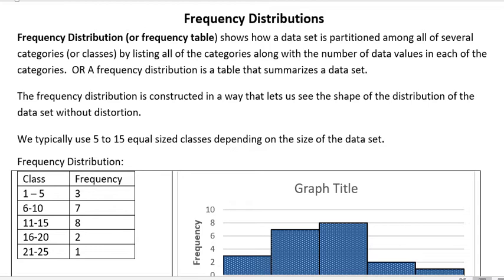Frequency distribution or frequency table shows how a data set is partitioned among all the several categories or classes by listing all the categories along with the number of data values in each of the categories. And that sounds more complicated than it actually is. We'll look at some examples in the following videos of actually organizing data.